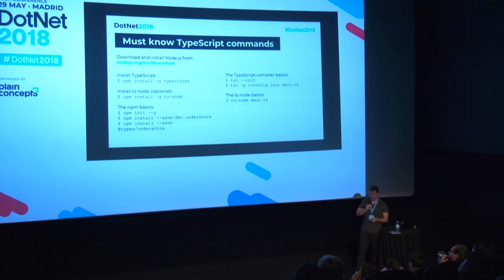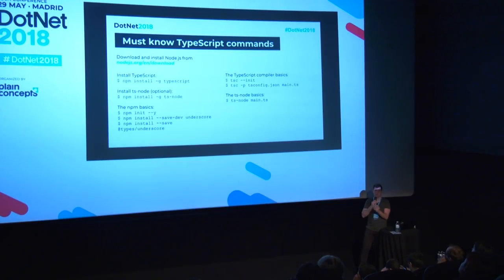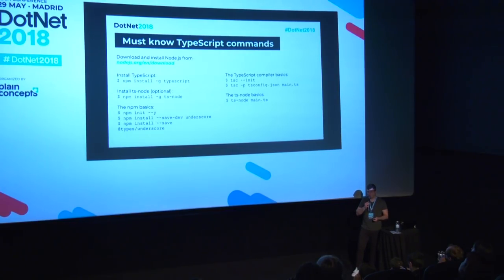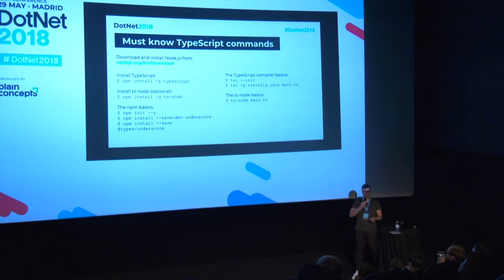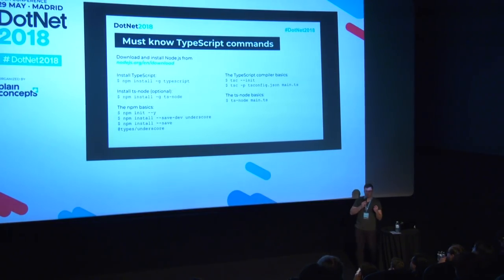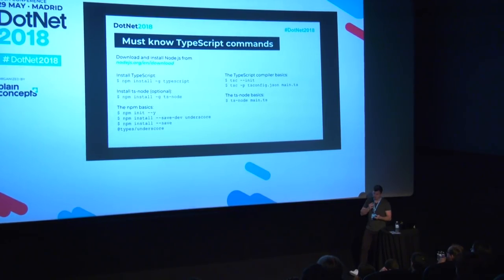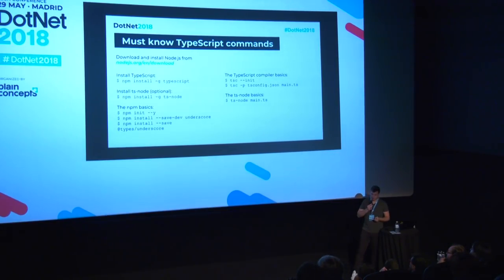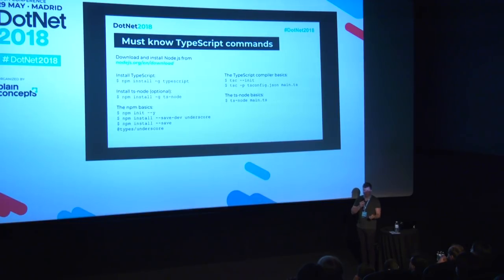Optionally, you can install ts-node, which is like Node.js but understands TypeScript — so you don't need to compile and then run; you can run directly. You can also use npm to install other dependencies. For example, to install Underscore, you do `npm install --save underscore`. But in TypeScript, if the package is a JavaScript library, you also need the types: `npm install --save @types/underscore`, and that installs the type definitions.